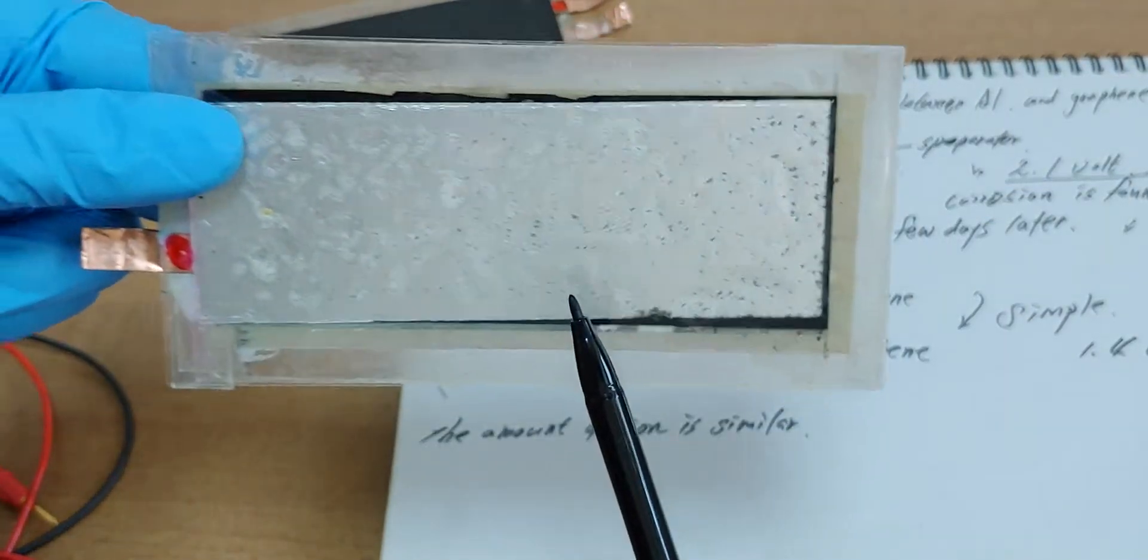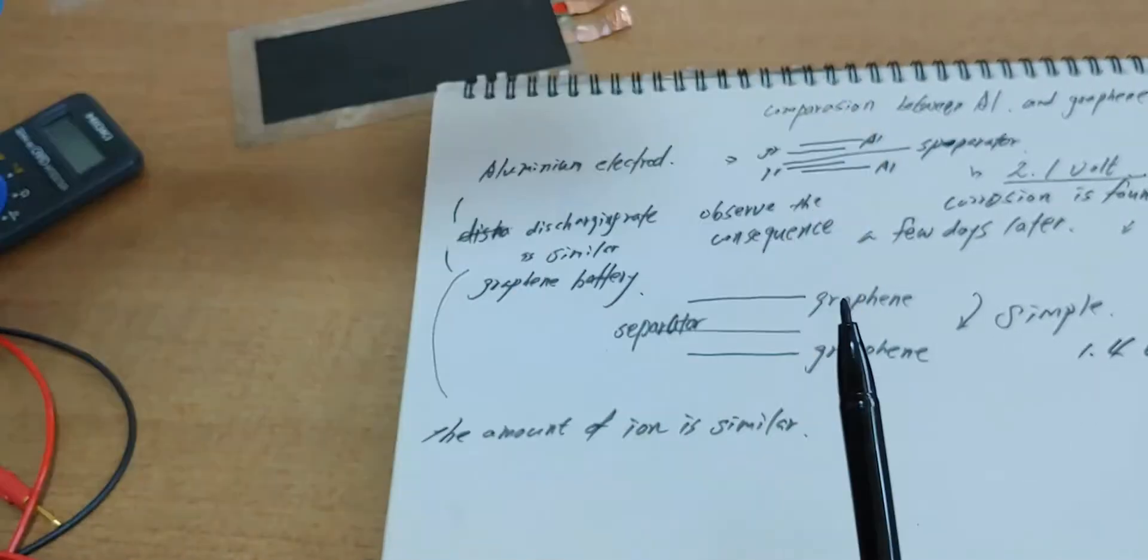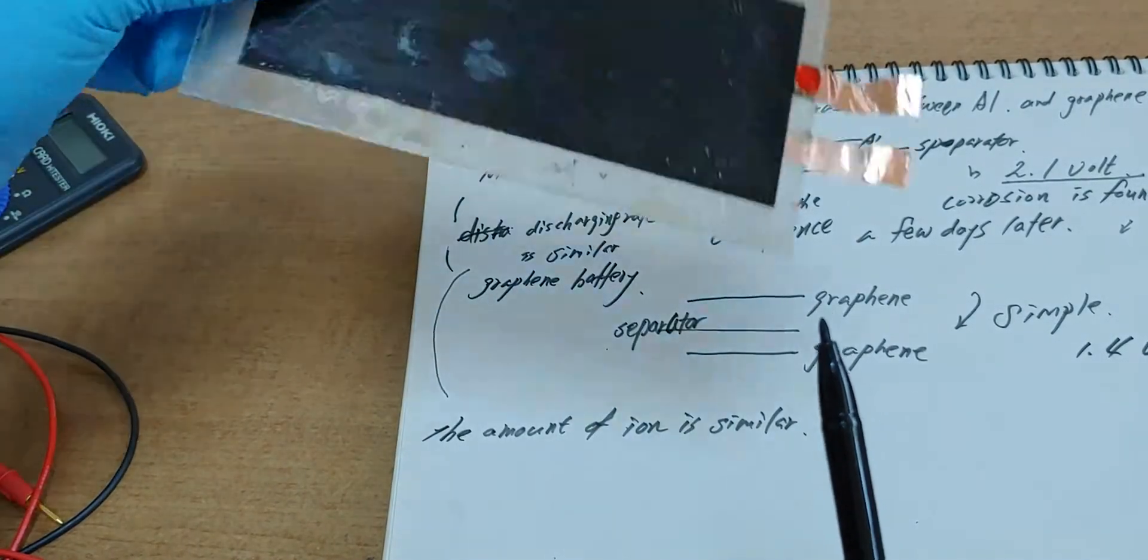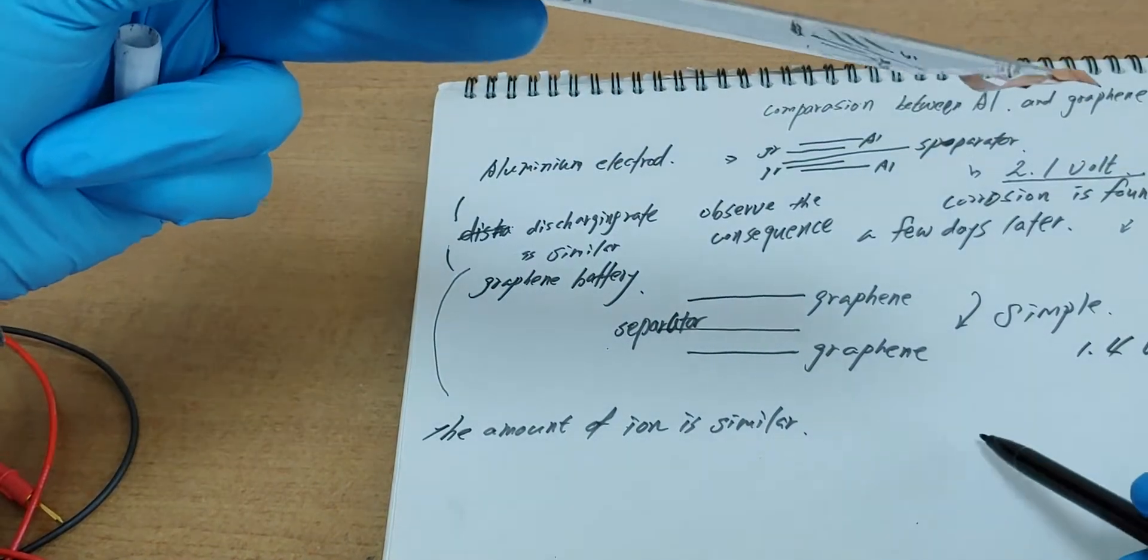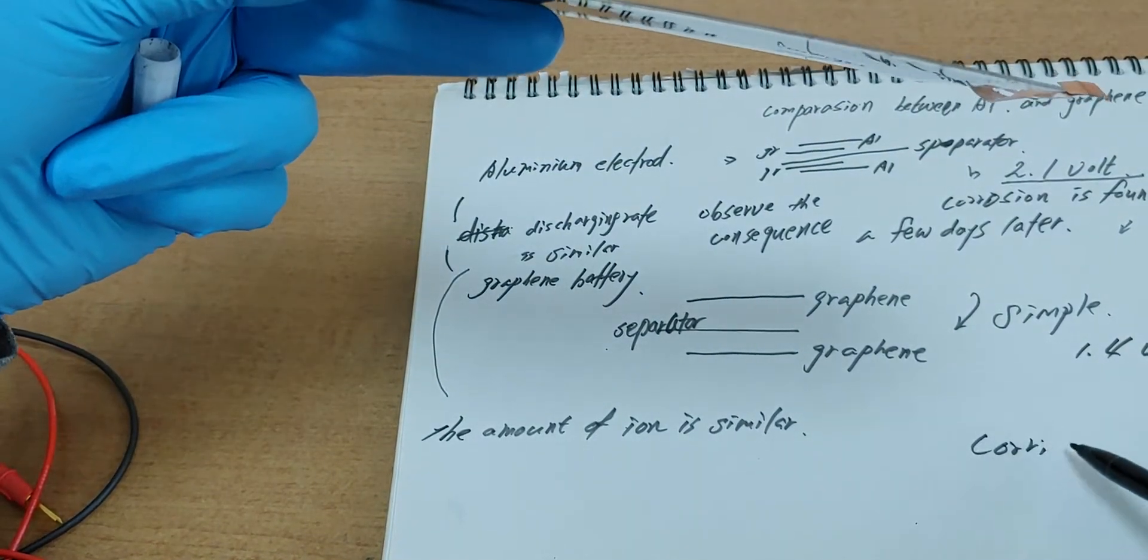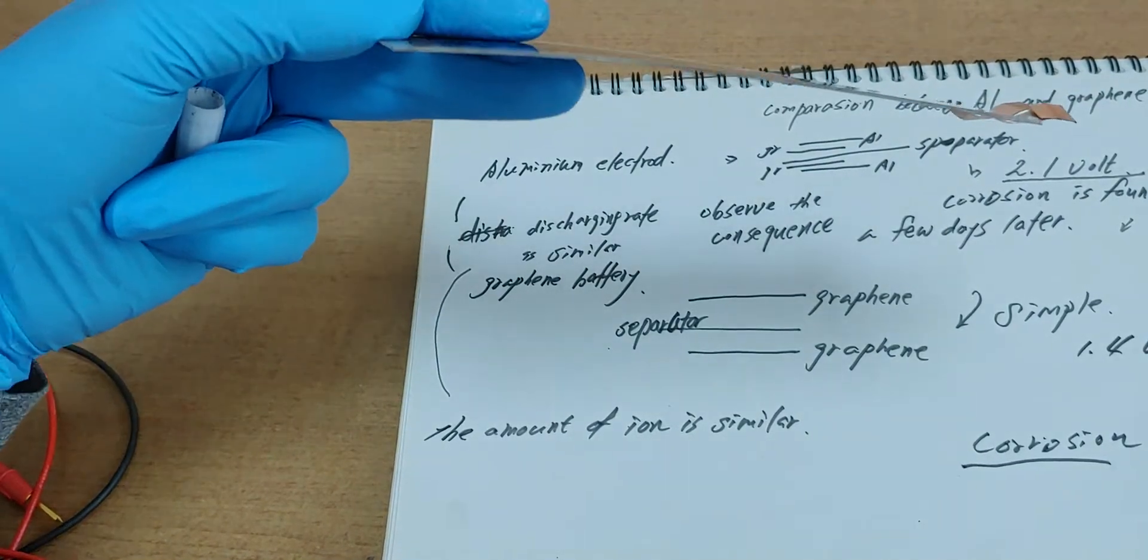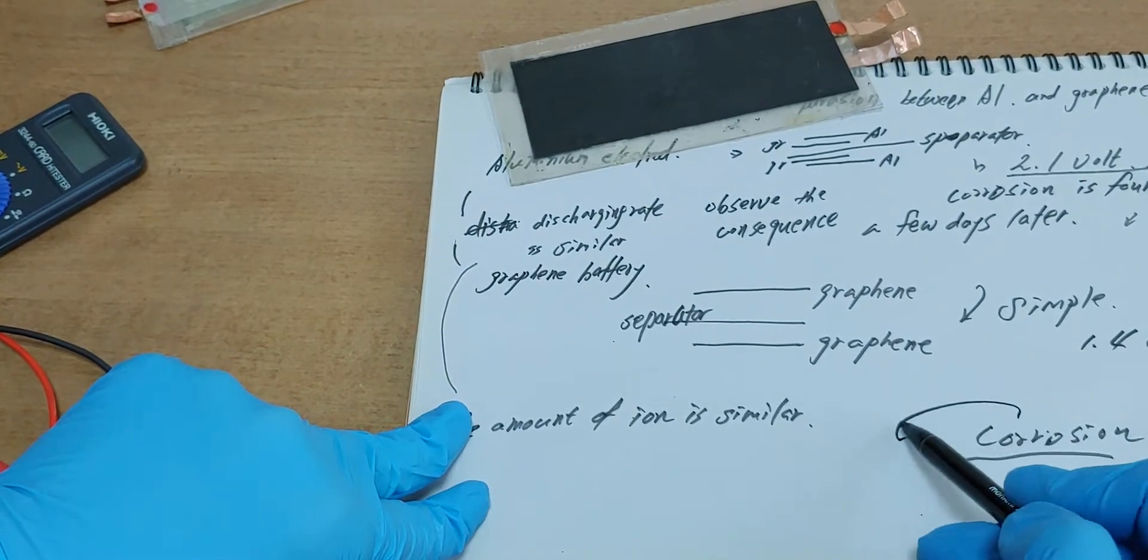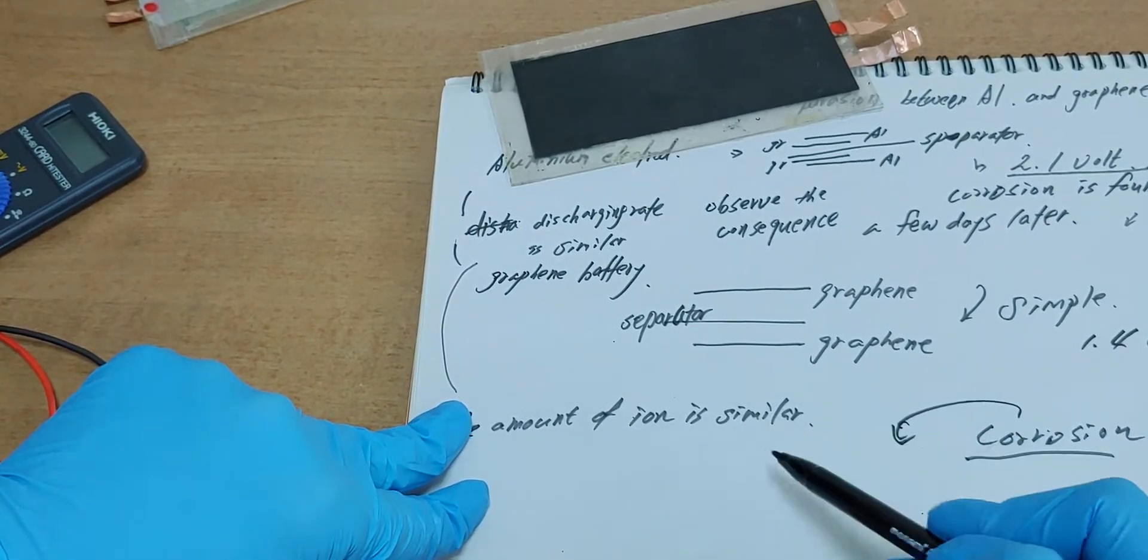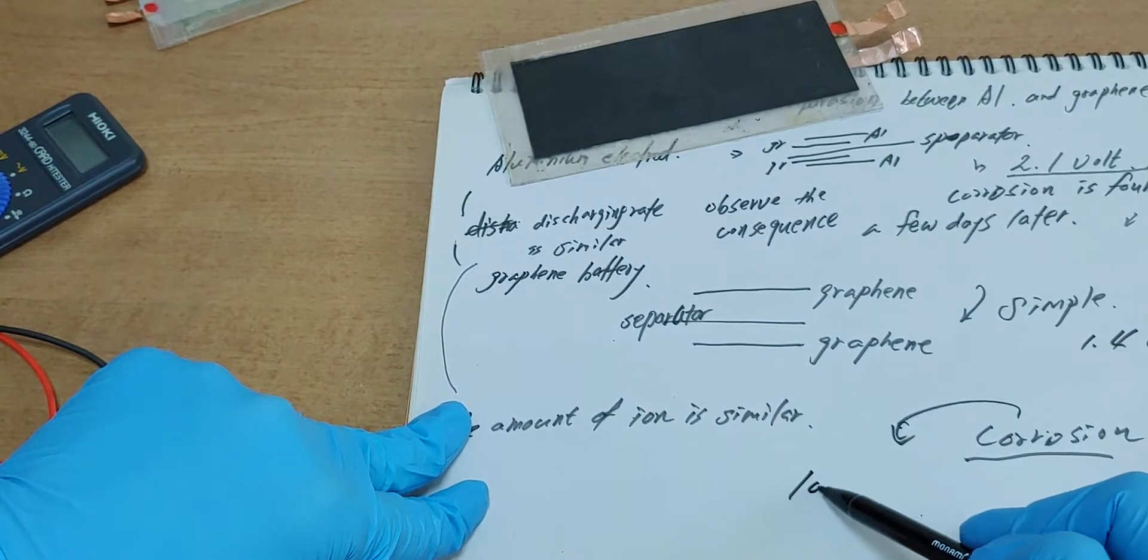But if we use aluminum, we cannot avoid corrosion. Because this is only graphene, there is no corrosion. Corrosion is really important because it is closely related to the longevity.